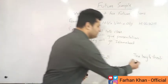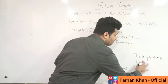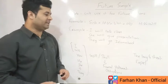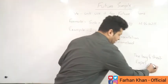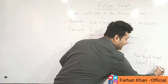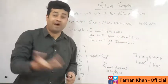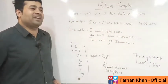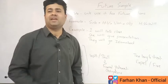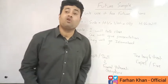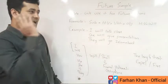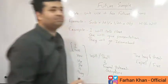What do we call 'nikaal dena' in English? 'Expel.' Americans say 'fire.' Americans also say 'goal' while British say 'aim' — my aim in life versus my goal in life. American vocabulary is quite technical.